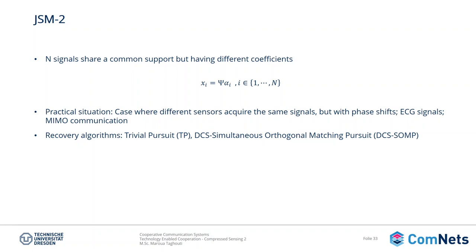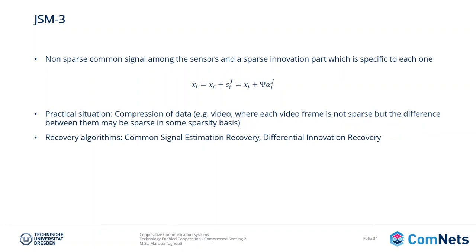And finally, JSM-3, which focuses on a non-sparse common signal among the sensors and a sparse innovation part specific to each one. Here XC is the common non-sparse component and ZI is the sparse innovation part. For a practical situation, we have compression of video data where each video frame is not sparse, but if we calculate the difference between frames it could be sparse in some sparsity basis. For recovery algorithms, we could use the common signal estimation recovery or differential innovation recovery.